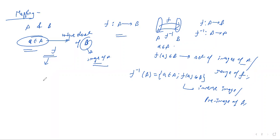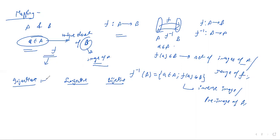We have studied functions as injective, surjective, and bijective — where injective is one-to-one, surjective is onto, and bijective is both one-to-one and onto.